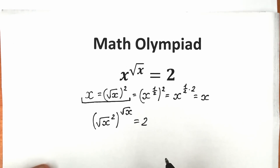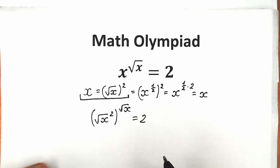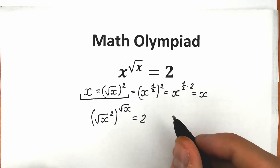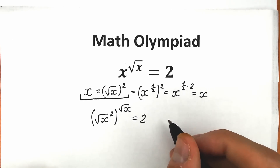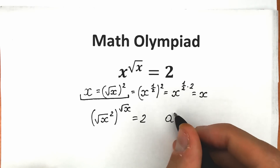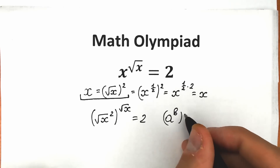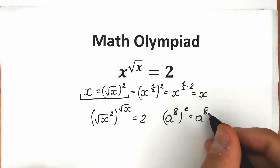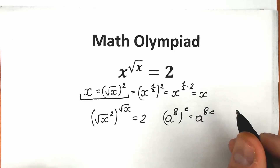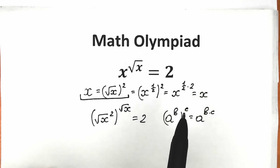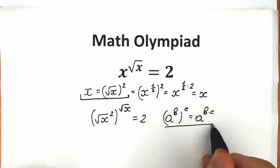Now we need a key rule — a power property everyone knows: if we have a to the power b, raised to the power c, we can write it as a to the power b times c. We already applied this rule earlier, so everyone should know this property.